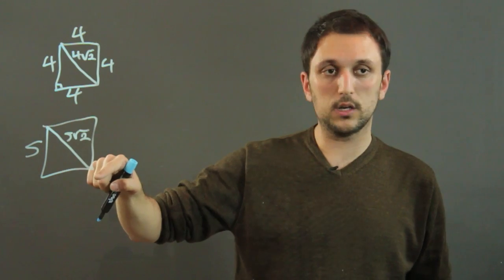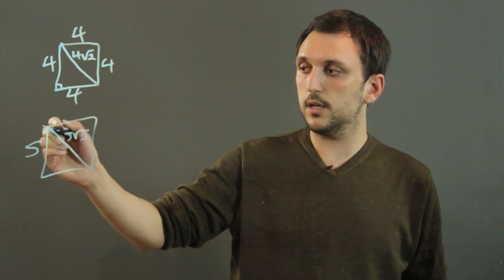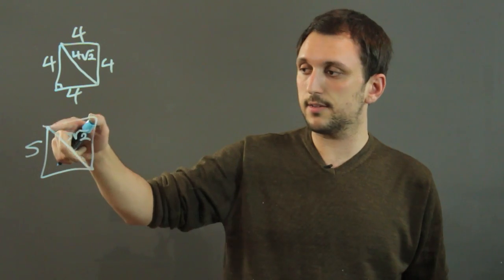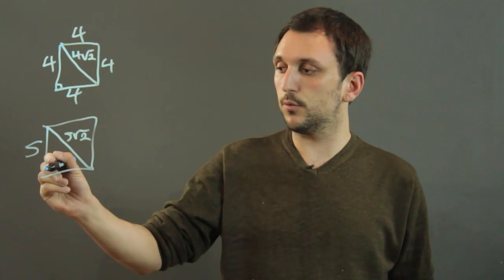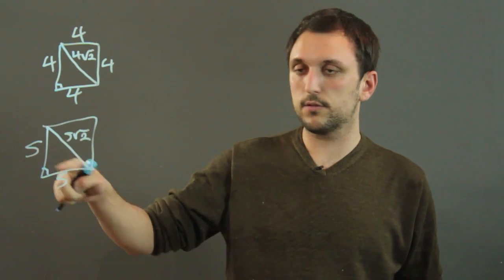So when we draw a diagonal line across the square, we cut it into two halves, which are each isosceles right triangles. Because we have a right angle, and we know that this is S, this is S.